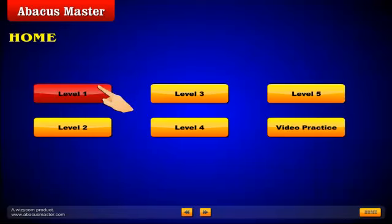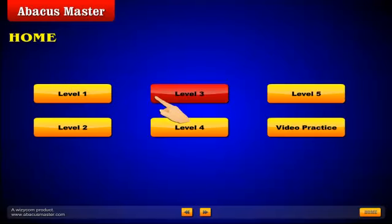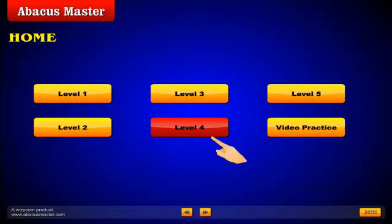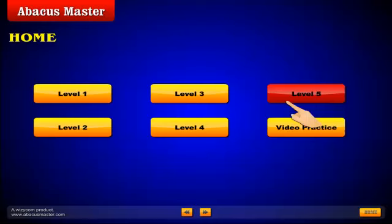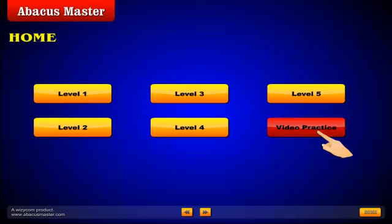Level 1 covers addition and subtraction of single digit numbers. Level 2 covers addition and subtraction of 2 digit numbers. Level 3 covers addition and subtraction of 3 digit numbers. Level 4 covers addition and subtraction of 4 and 5 digit numbers. Level 5 focuses on multiplication and division in detail. The video practice module is designed for students to practice and improve their speeds on a real Abacus.